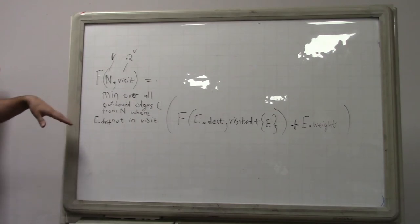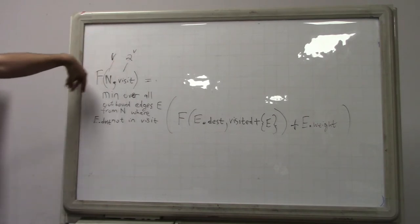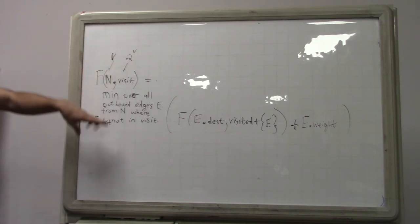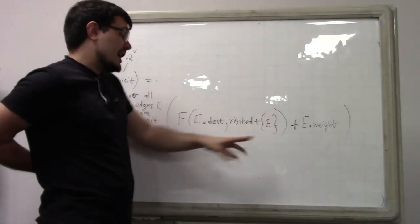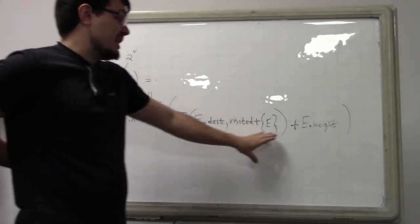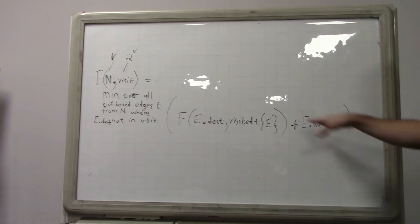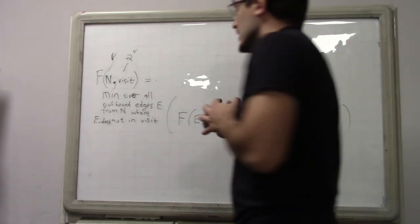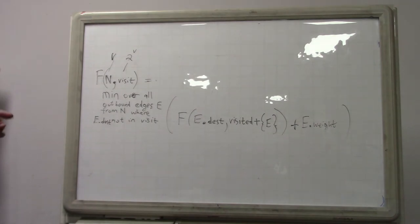Like, this is just a general case. You will have V times two to the V states, and you will do min, from each one, you will consider all the possible outbound edges that you're legally allowed to go to, and the cost from there will be this, and the cost to go there will be this, so you will consider that, and you will consider that over all the possible choices, and from there, you will look at which one is the best decision.